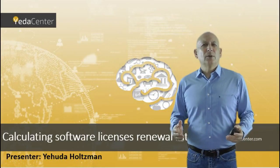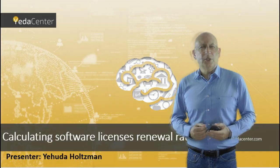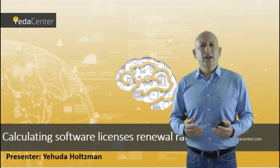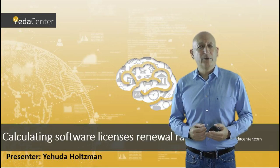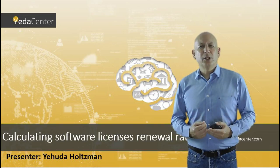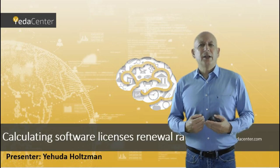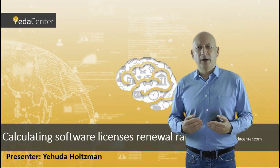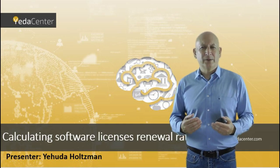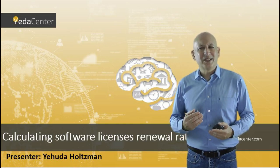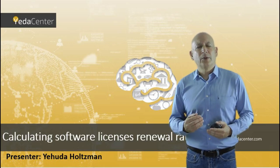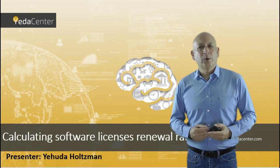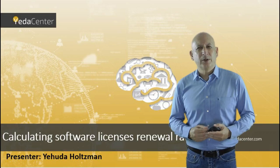To summarize this short session, we reviewed three methods to calculate license renewal: by number of customers, number of licenses, and by revenue. We discussed when to use each parameter. In order to decide which to use, we should have a good understanding of our license renewal characteristics. In most cases, we will present the renewal rate using more than one method. Good luck with calculating your renewal rate, and see you at the next video. Thank you.